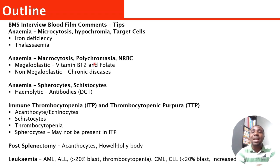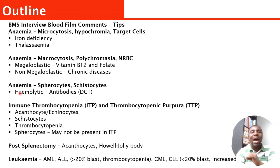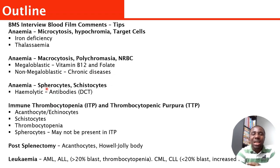Another type you're going to see is where the red blood cells are bigger in size, which is called macrocytosis. It always goes in line with polychromia and nucleated red blood cells. When you see that, start thinking it might be megaloblastic anemia, which can be due to vitamin B12 or folate deficiency. If not, it may be non-megaloblastic anemia, which could be due to chronic diseases such as liver or kidney disease.